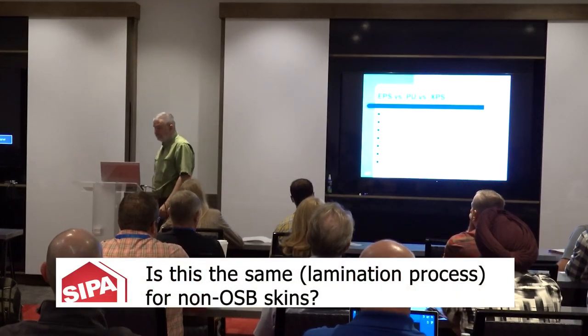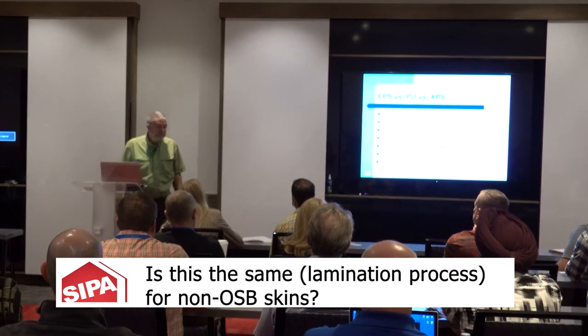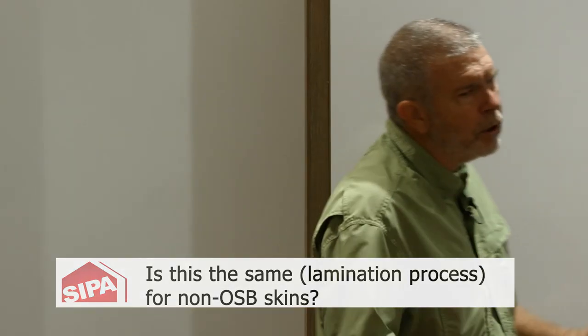For non-OSB skins, the process is almost identical — you take the sheet goods through the same lamination process into a press. I've laminated composites, magnesium oxide boards, concrete or cement boards — it doesn't matter. Polyurethane will stick to anything, including your flannel shirt if you want.